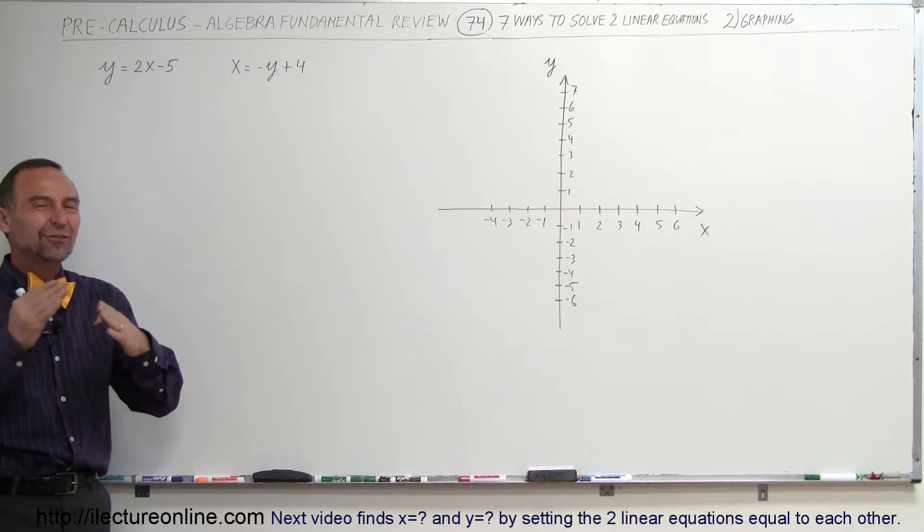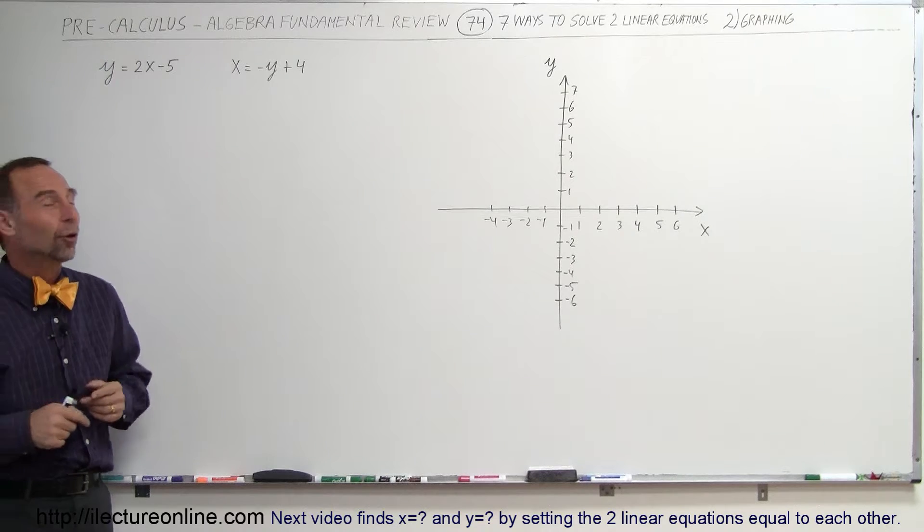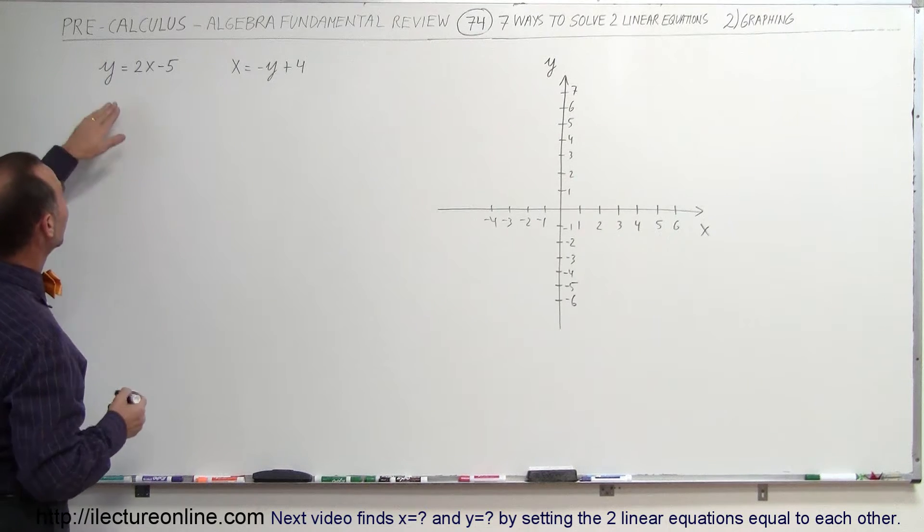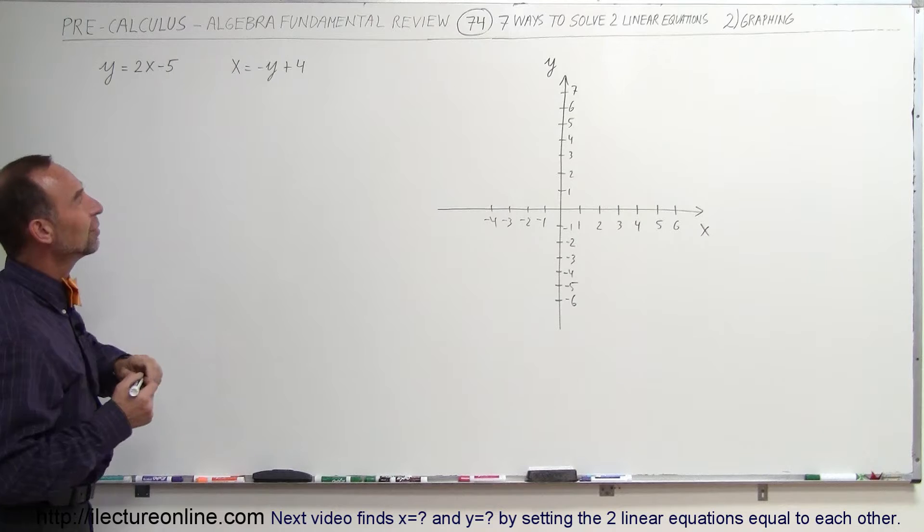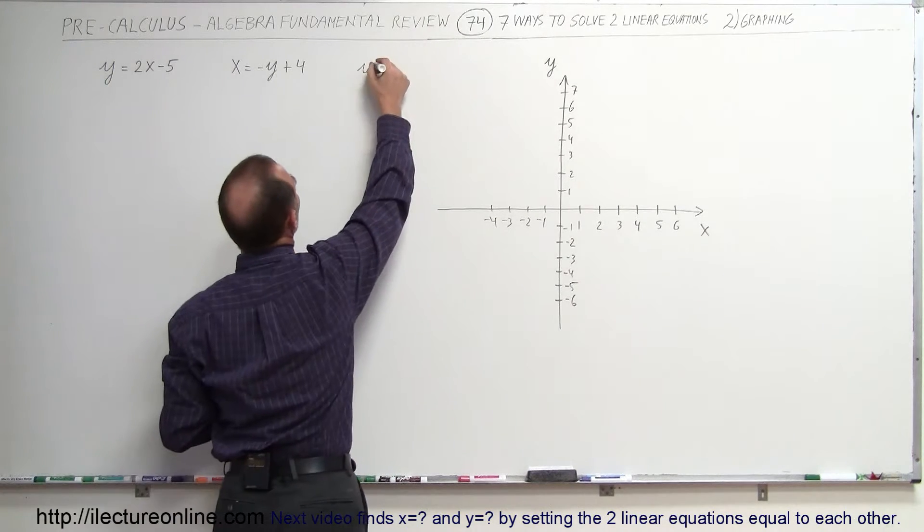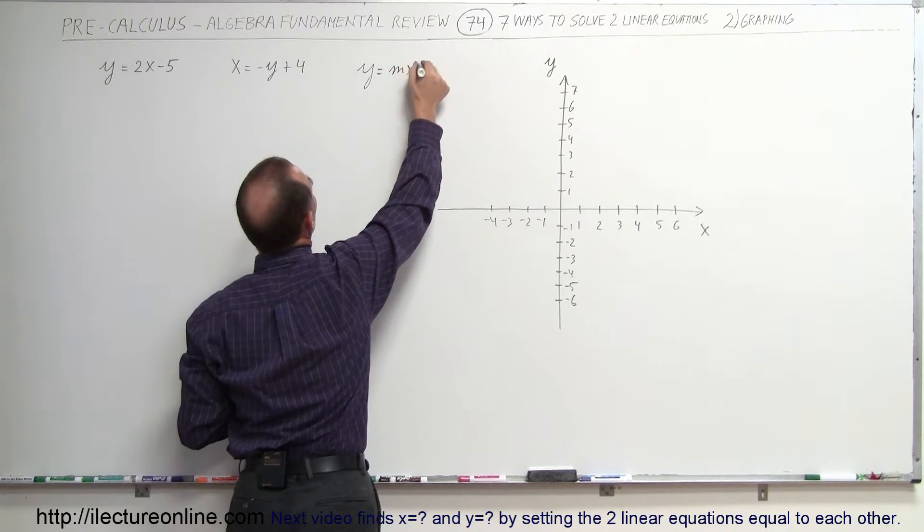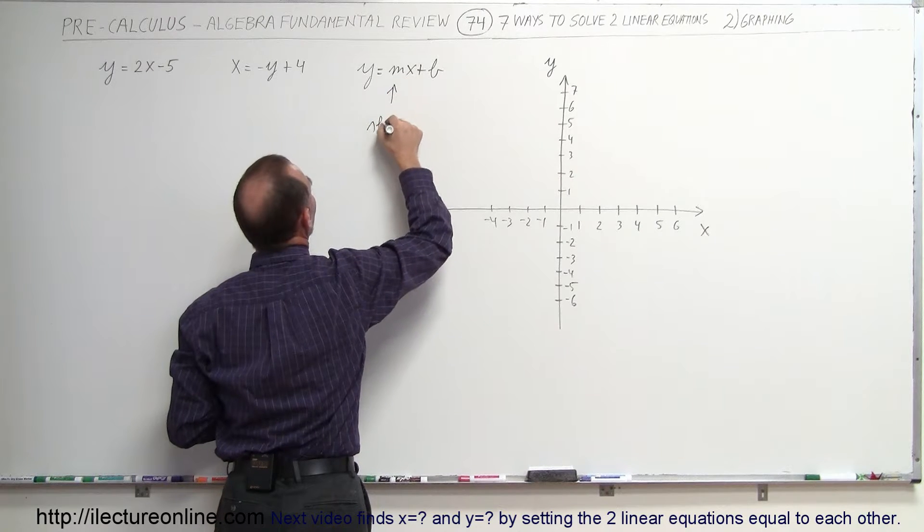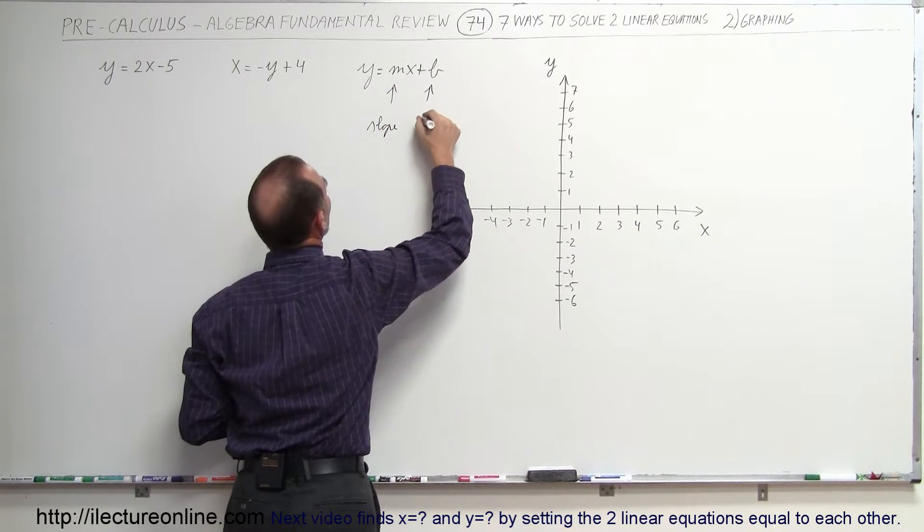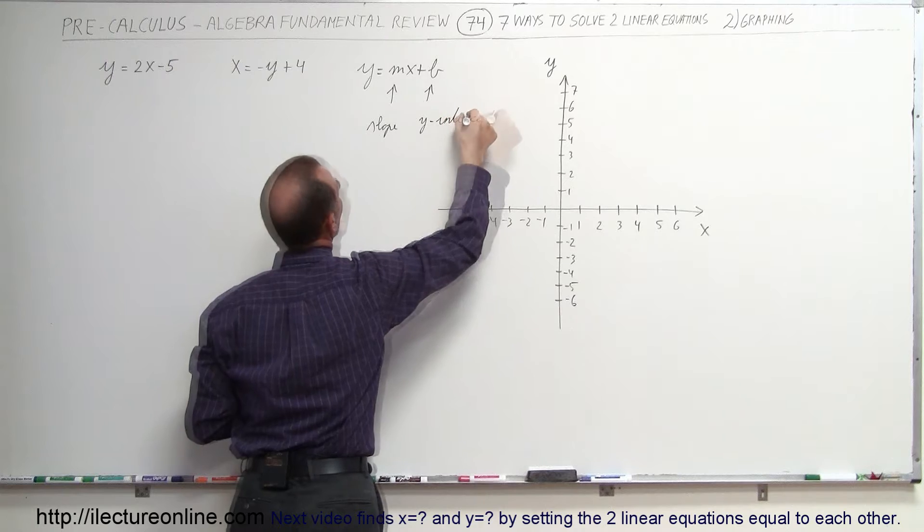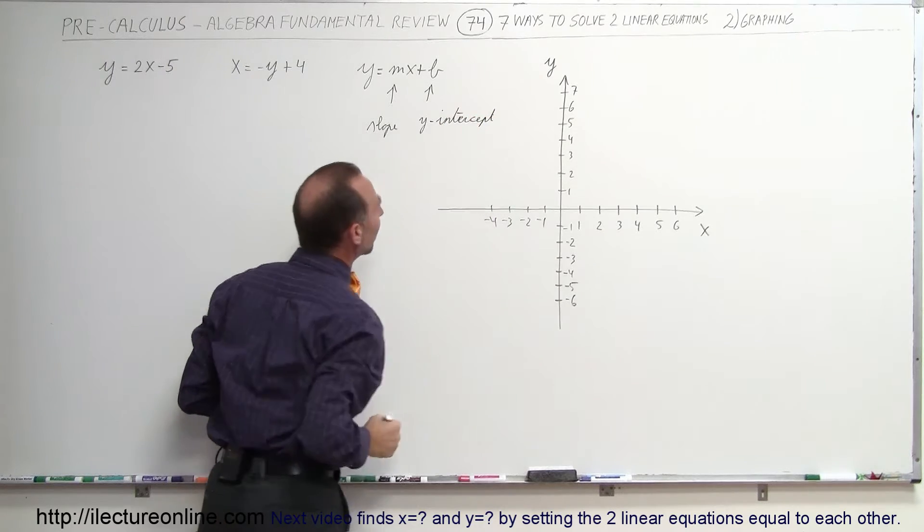Now, the graphing technique doesn't always give you the exact answer, but it'll get you close. So this is how we do it. First of all, we want to write the equation in the format y equals mx plus b, where m is the slope of the line and b is what we call the y-intercept.